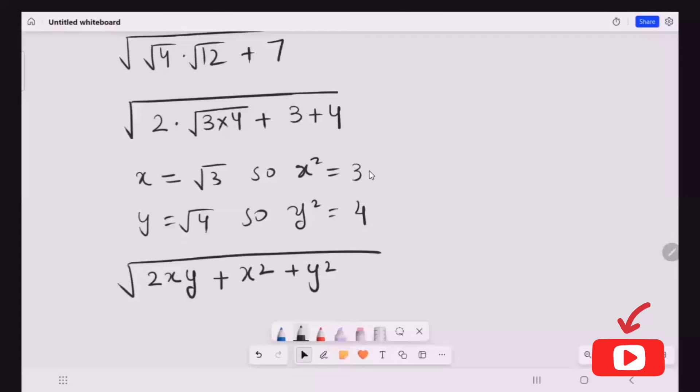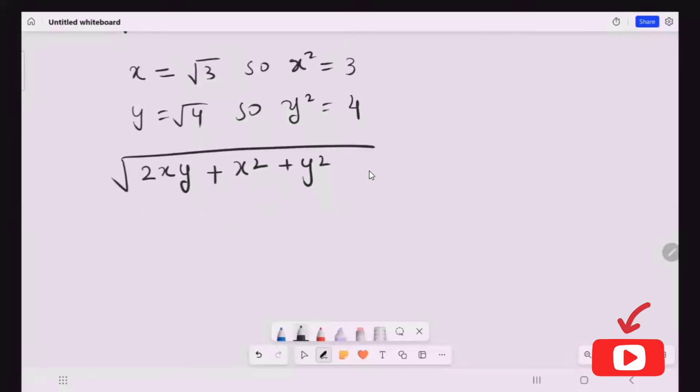Now this is our formula, that is equal to x plus y bracket square. Now if I'm going to open it with this and cancel it with this radical, x plus y.